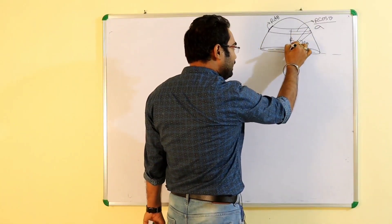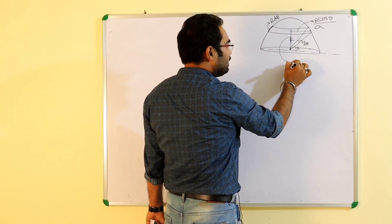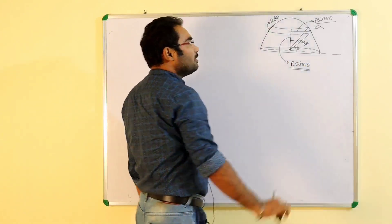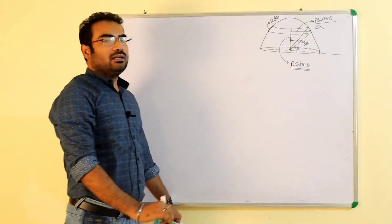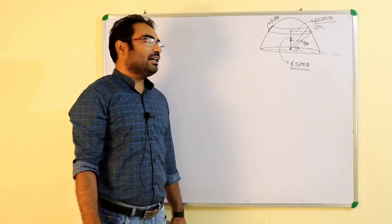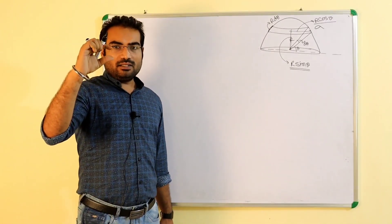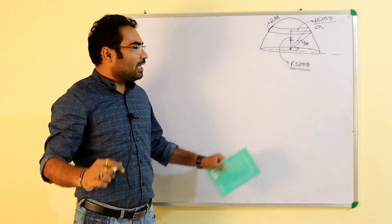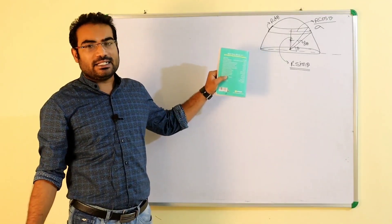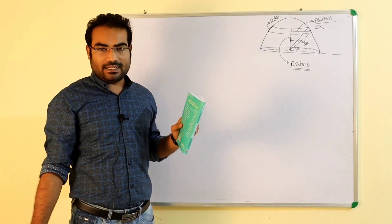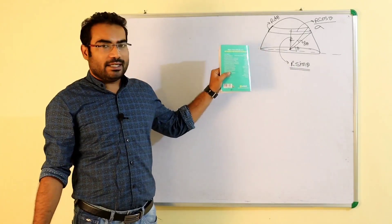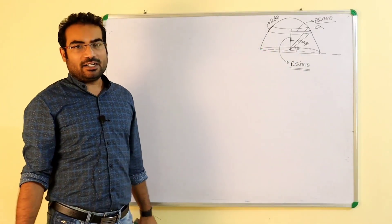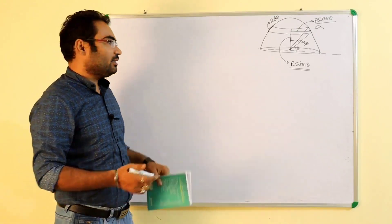Aur yeh center kitne dure pe hoga? R sin θ ke barabar. Matlab, yeh jo humne ring consider kiya uska width R dθ ke barabar hai, radius R cos θ ke barabar hai, aur hemisphere ke center se voh ring R sin θ ke distance par hai. Chunki ring hai, to aap asani se us point pe electric field ka value calculate kar sakte hain.